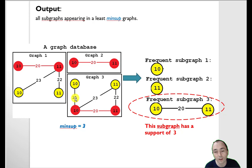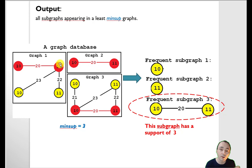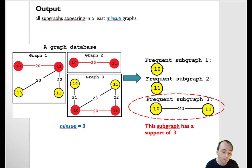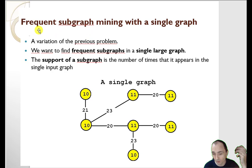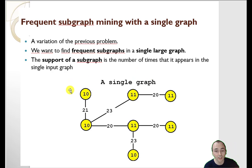This is the intuitive definition of frequent subgraph mining: we have a graph database and we want to find what is common — what appears many times. For example, we could have a database of chemical molecules and want to find some patterns in that database. Also, in some papers, they have changed the problem so that instead of finding the frequent subgraphs in a graph database, we find them in a single graph. So our data is a single graph, and we count how many times the subgraph appears in it.